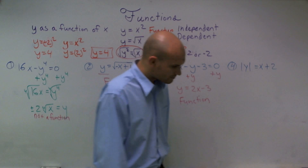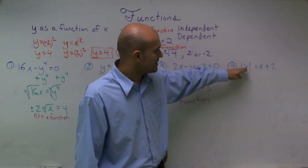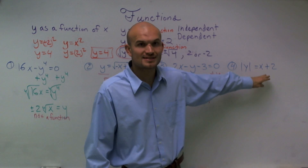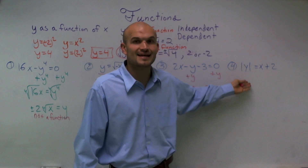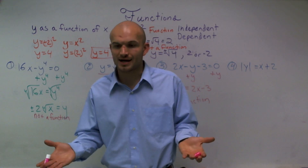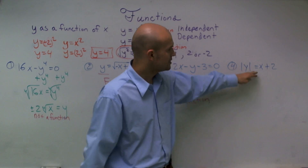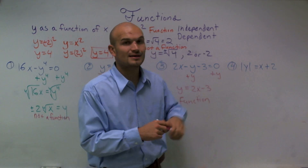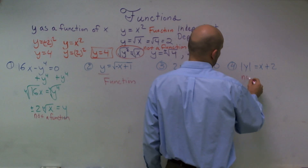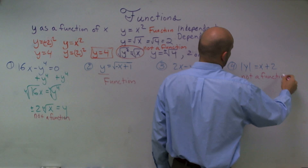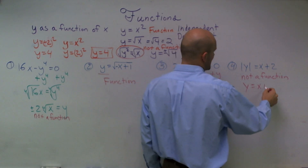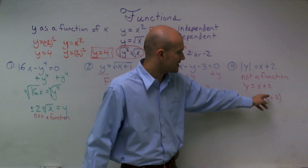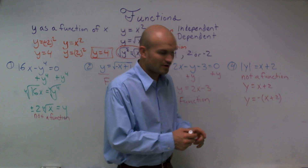For number four, when you have the absolute value of y equals x plus 2, remember that the absolute value of y means you're considering both positive and negative. No matter what my value of x is, that's going to produce a positive and a negative value of y. So since my input produces two different outputs for y, this is not a function. We can write this as y equals x plus 2 and y equals negative x plus 2 — no matter what I plug in for x, I have two different answers for y.